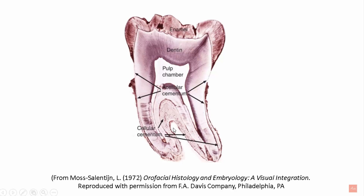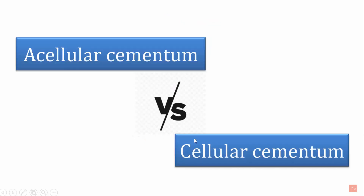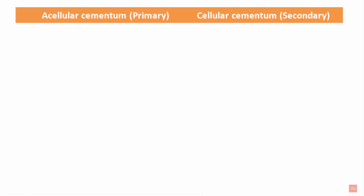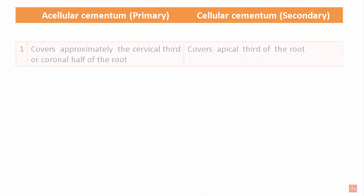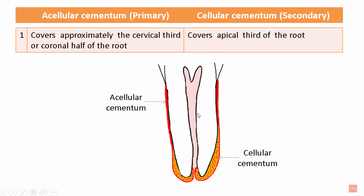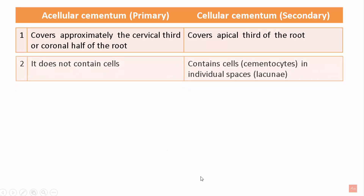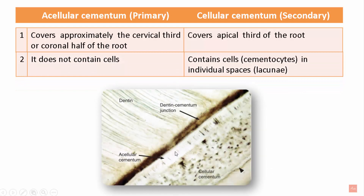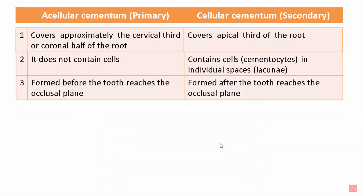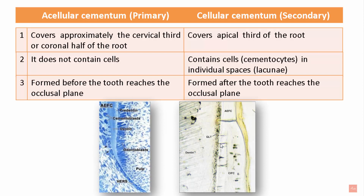The cellular cementum also occupies zones near the furcation areas. The acellular cementum is called primary cementum because it forms first, and cellular cementum is called secondary cementum. The acellular cementum occupies the coronal one-third or half of the tooth root; the cellular cementum occupies the apical third or half. The cellular cementum contains cementocytes present in individual lacunae.